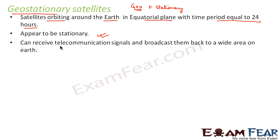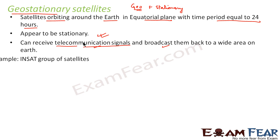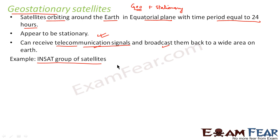These satellites can receive telecommunication signals and broadcast them back to a wide area on earth. So geostationary satellites are mostly used for telecommunication signals. An example is the INSAT group of satellites — these are the group of satellites which are geostationary, made to orbit around the earth with a time period of 24 hours.